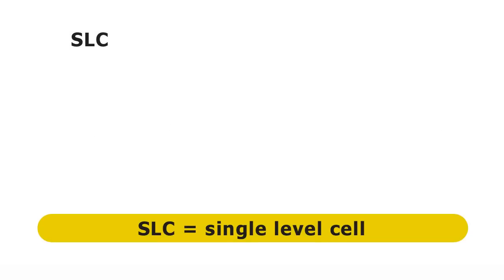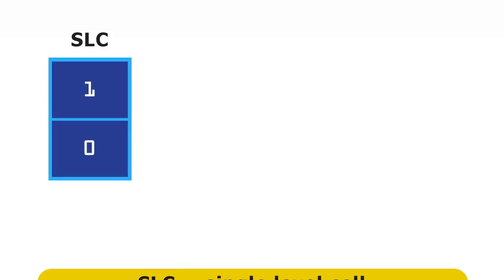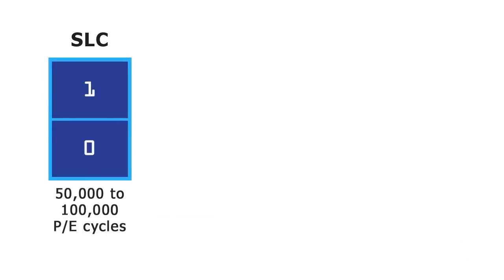All early SSDs were based on SLC or single-level cell technology. This stores one bit of information per cell, with modern SLC SSDs rated at between 50,000 and 100,000 PE cycles. However, SLC is very expensive and today SLC SSDs are only manufactured for use in servers and other enterprise applications.